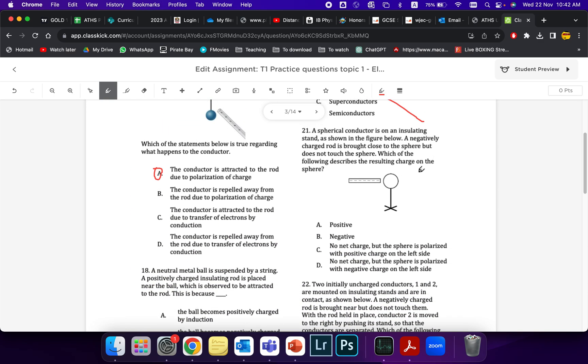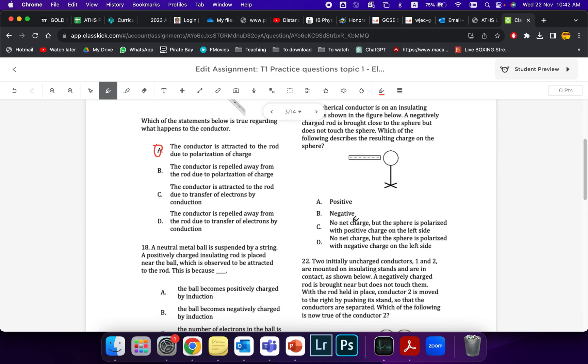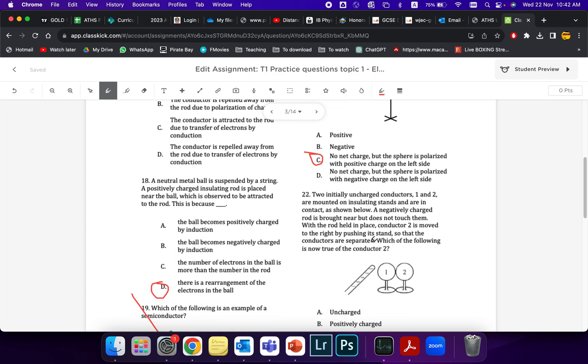Over here, this is all about rearranging as usual. There will be no net charge, but it will be polarizing. Because this is negative, the pluses will be on the left, and the negatives will be on the right over here. So that's why the answer in this case would be C.